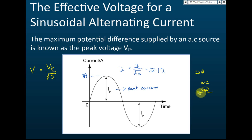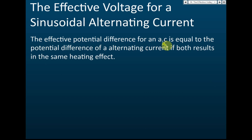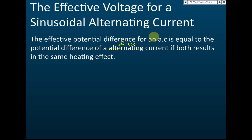The effective current of this alternating current is 2.12 amperes, and it produces the same brightness as the 2-ampere direct current. That is the meaning of effective voltage or effective current: the current which produces the same heating effect or same brightness as the same value of direct current. The effective potential difference of an alternating current is equal to the potential difference of a direct current if both result in the same heating effect.